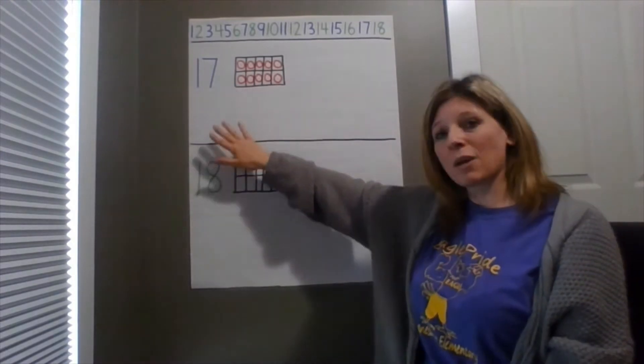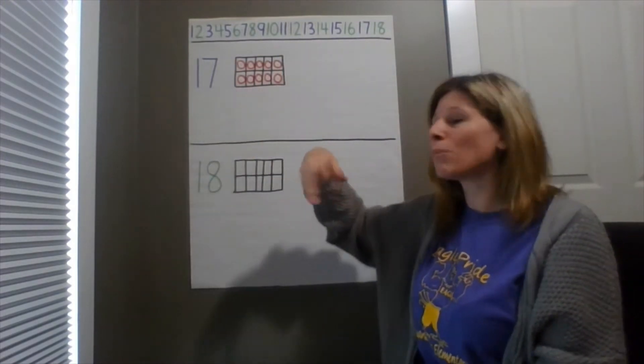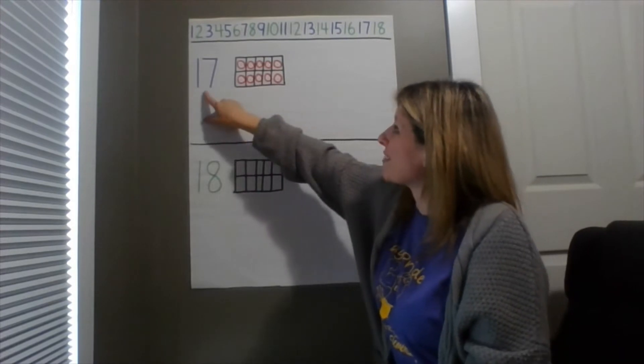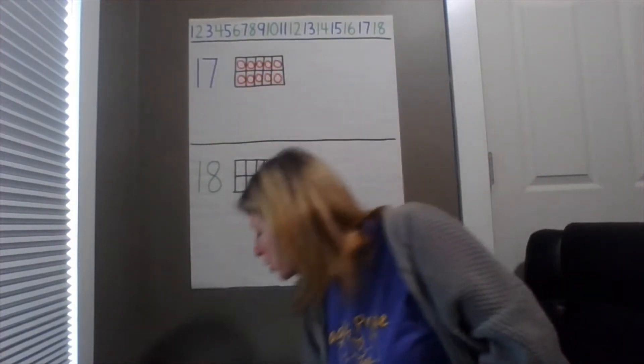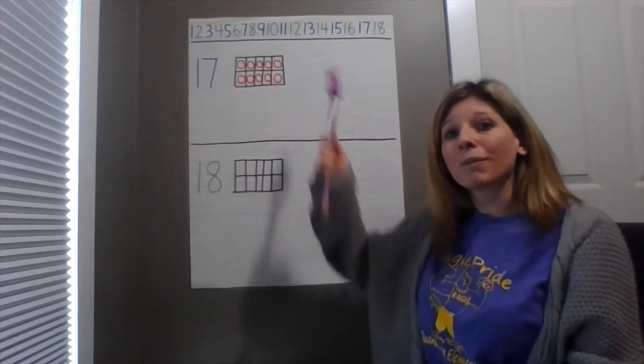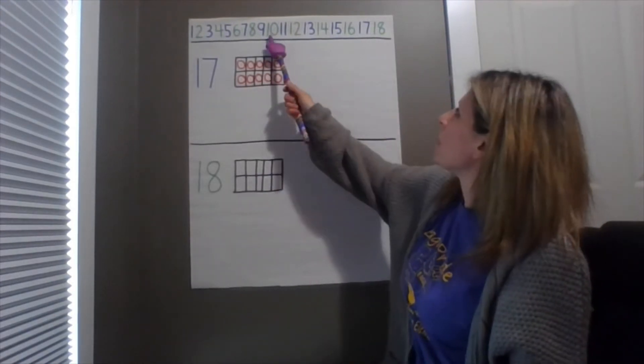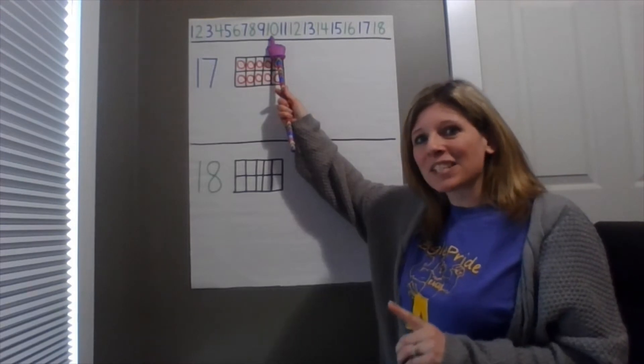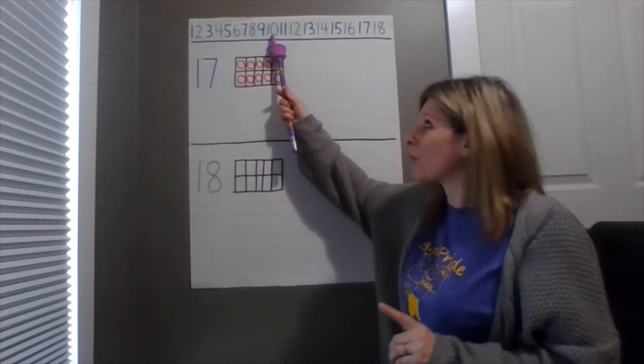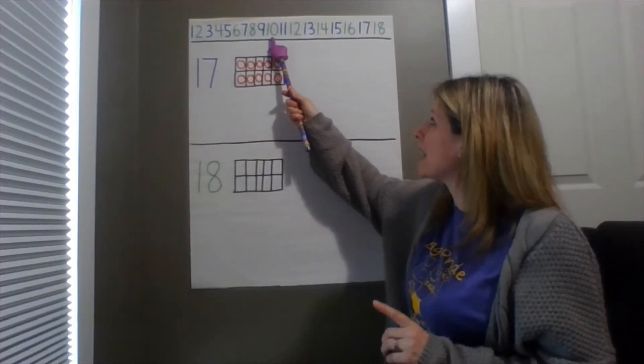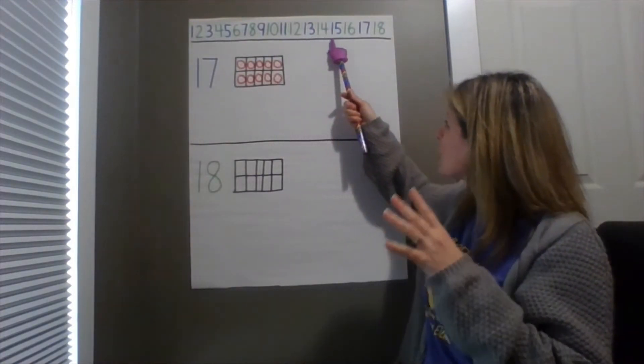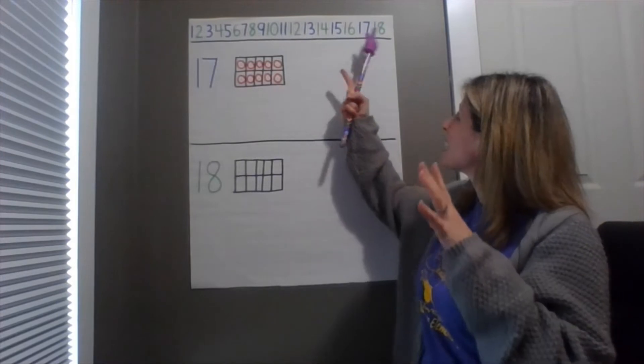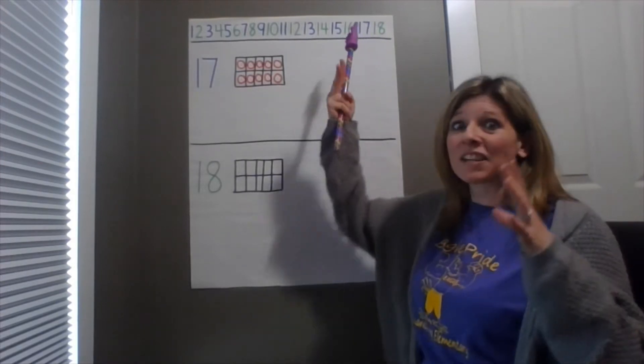So we know that our teen numbers are a group of 10 and then some more. So starting for 17, we're starting with a group of 10 and then we need more. So let's find 10 up here on my number line. There's 10. Now I know I need to get to 17 to figure out how many more. So let's start at 10. I'm gonna go 10, 11, 12, 13, 14, 15, 16, 17.